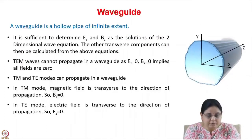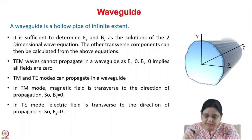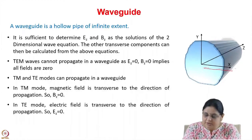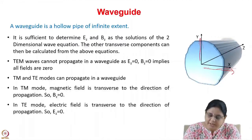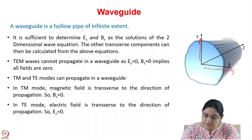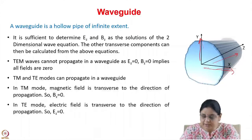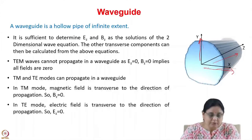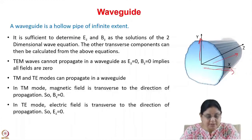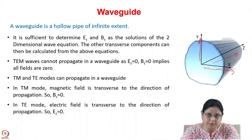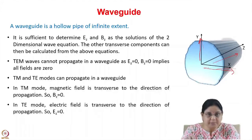We also learnt about the waveguide — a hollow pipe of infinite extent with an arbitrary cross section. It has boundaries in two directions; for example, bounded in x and y while the electromagnetic wave is free to propagate in the z direction. We saw that it is sufficient to determine Ez and Bz as solutions of the two-dimensional wave equation, since Ex, Ey, Bx, and By are all functions of Ez and Bz only.